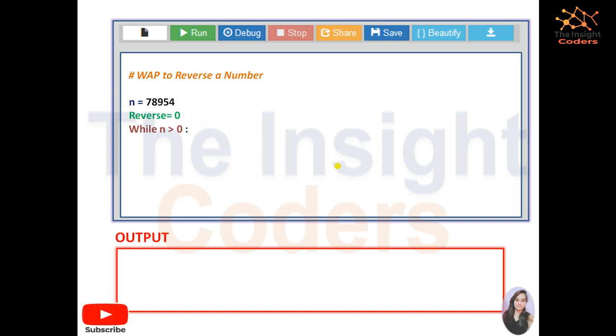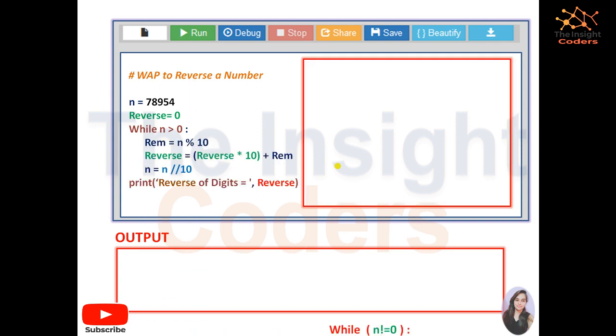The reverse which is initialized to 0 due to additive property. We'll have some loop. Just understand what we are actually doing. So let's come to the example first then we'll come to the code. So here, let's say the number is 78954.